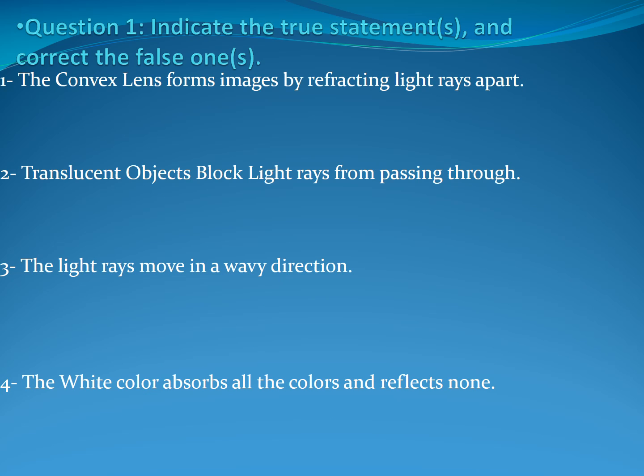Indicate the true statements and correct the false ones. First: the convex lens forms images by refracting light rays apart. Second: translucent objects block light rays from passing through. Third: the light rays move in a wavy direction. Fourth: the white color absorbs all the colors and reflects none.